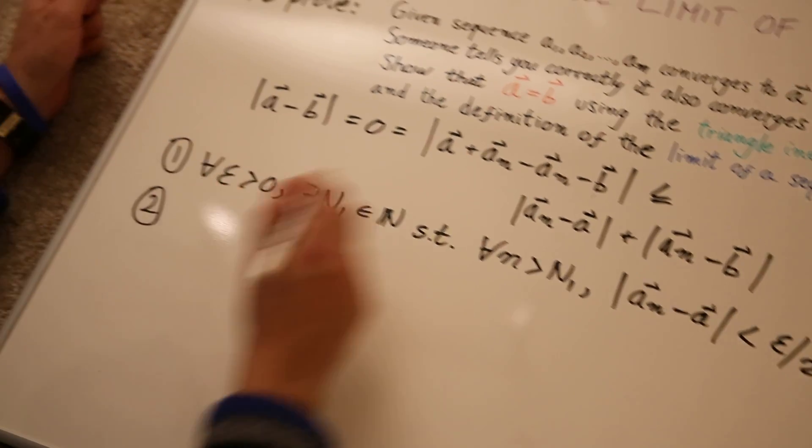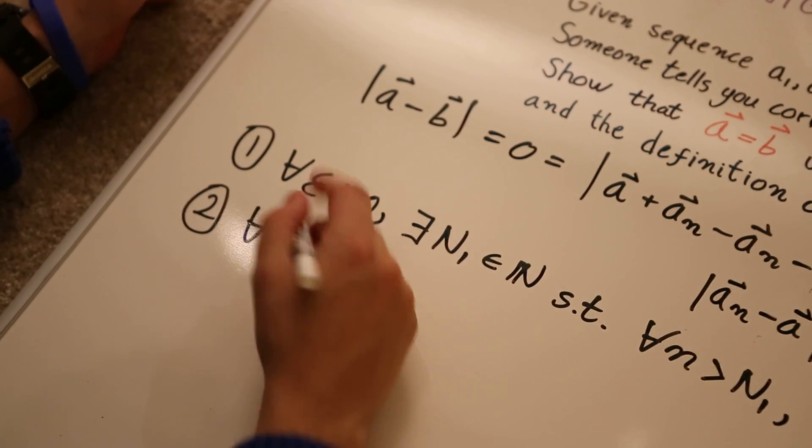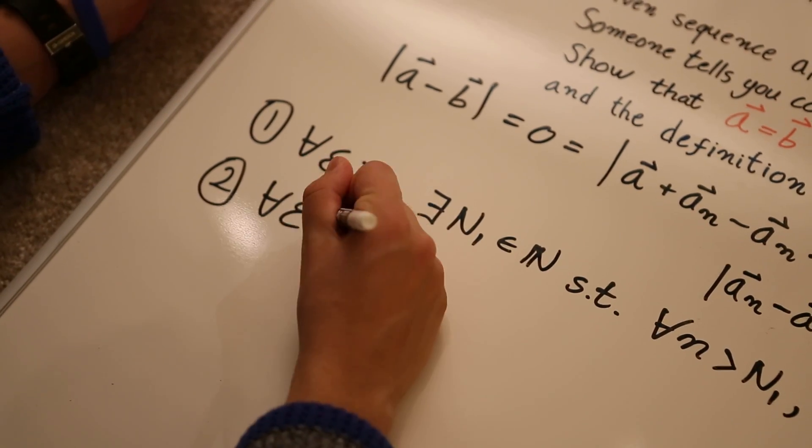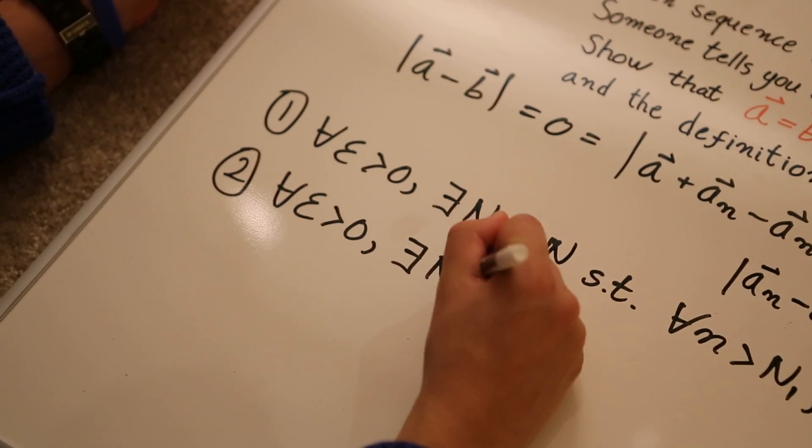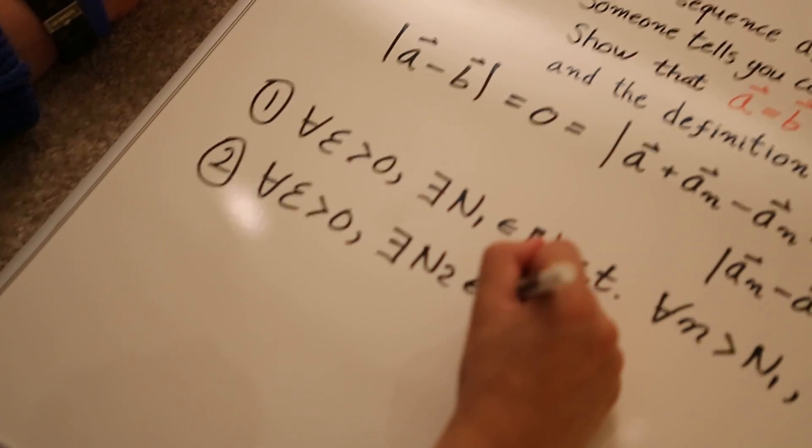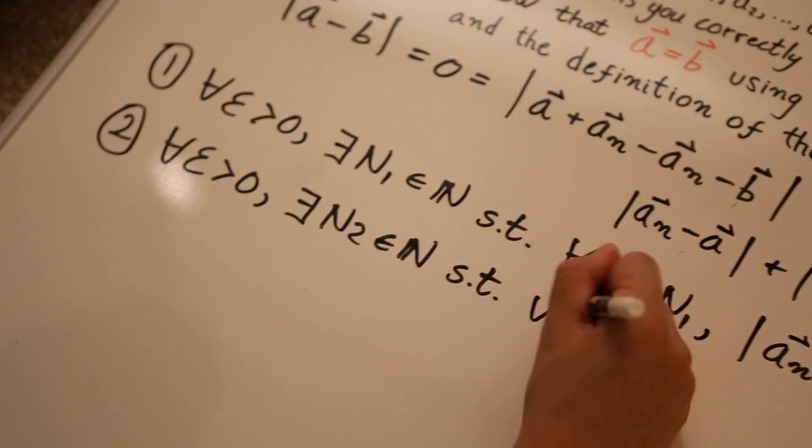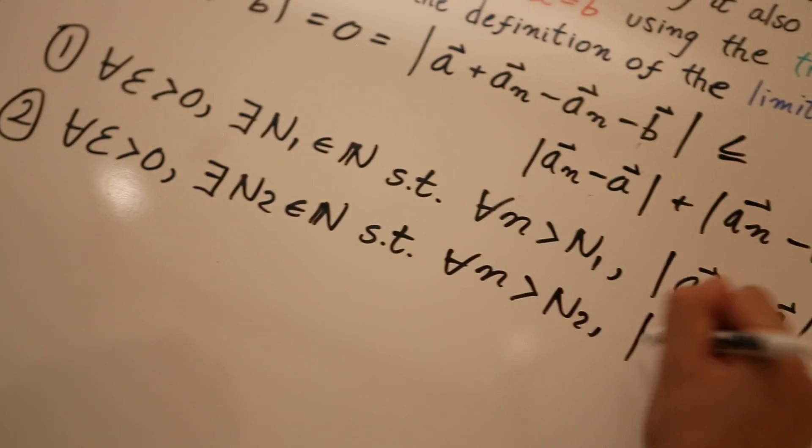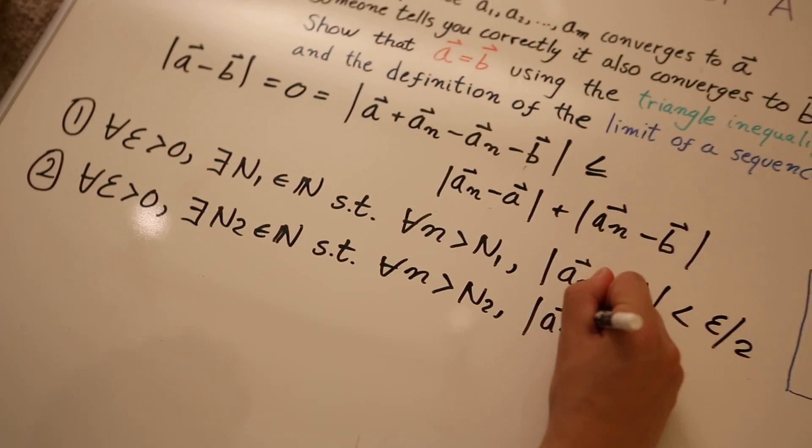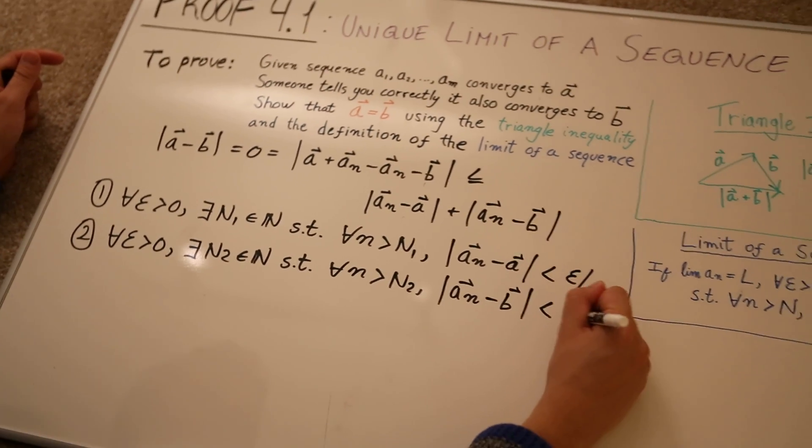So, for the second one, for Bob's analysis, we say the same definition, just we're going to change the N1 there. For all epsilon greater than zero, there exists some N2, member of the natural numbers, such that for all little n greater than N2, then this is true. AN minus B is less than epsilon over two.